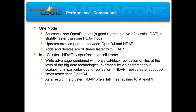In our performance test, we took one of the most well-known traditional LDAP directories, OpenDJ, and used it to compare the performance of our HDAP store. At a high level, the results were: for one node, one instance of OpenDJ was slightly faster than HDAP for searches. Update speeds were comparable between the two storages, and adds and deletes were 10 times faster against HDAP than OpenDJ.